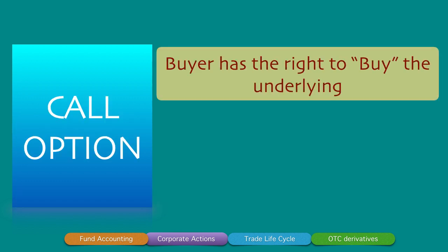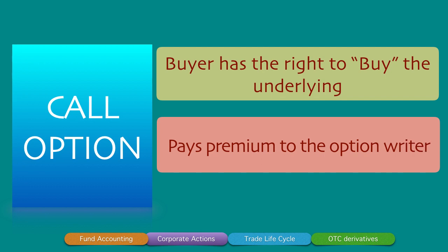A call option gives the buyer the right to buy the underlying asset. It allows the holder or owner of the option to choose whether to exercise or allow the option to lapse. Because the buyer has all the entitlements under an option, the buyer pays a premium to the option writer, also called the option seller. Like every trade, there are two counterparties: the buyer and the seller.